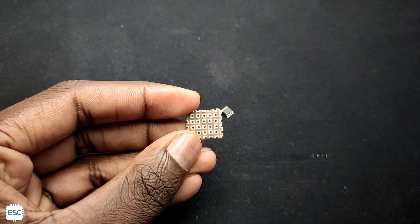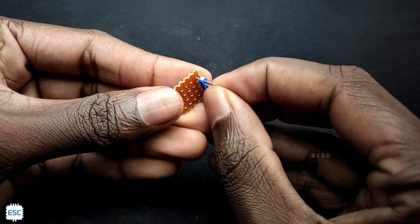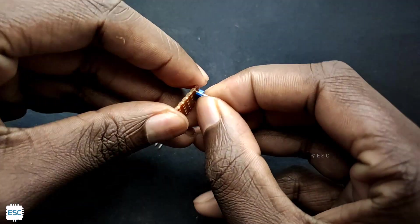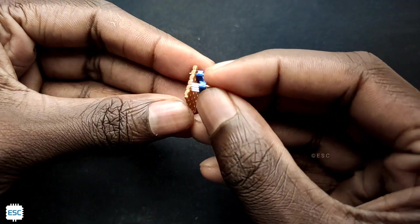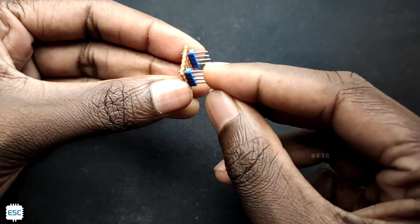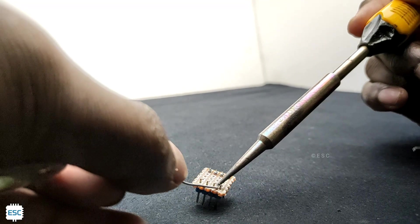Now I am having an SMD version of ATtiny13, so first I'm going to make a breakout board for this. First I took dot board and male header pins, then I inserted the male header pins into dot board and soldered them.